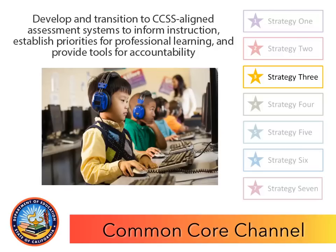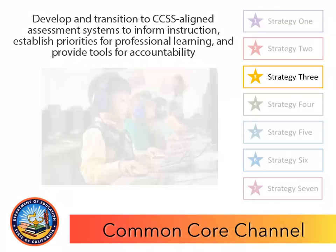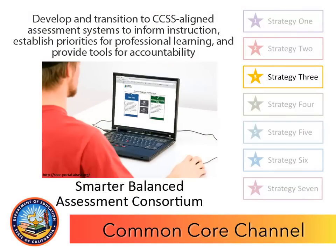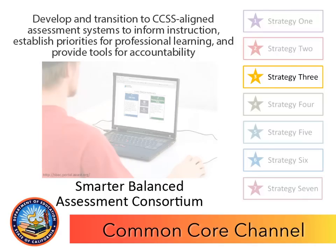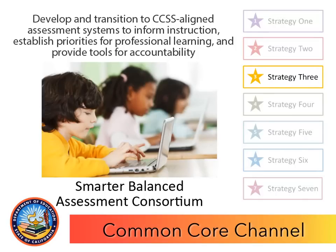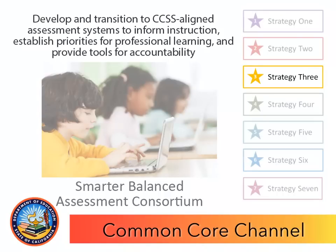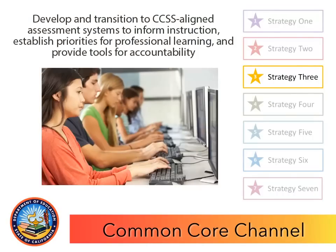Strategy three is to develop and transition to CCSS-aligned assessment systems to inform instruction, establish priorities for professional learning, and provide tools for accountability. This strategy centers on California's participation in the Smarter Balanced Assessment Consortium and many activities involved in transitioning to a new assessment system which is balanced, coherent, and comprehensive across grades and subjects. This includes new assessments to measure English language proficiency and alternate assessments for students with severe cognitive disabilities.